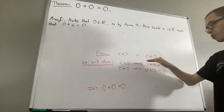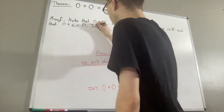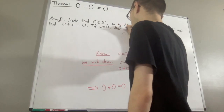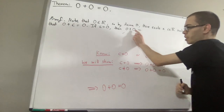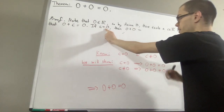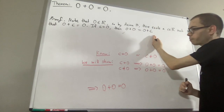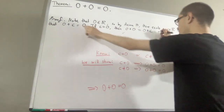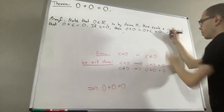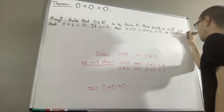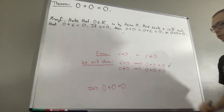We'll start with the first implication: if c is equal to zero, then zero plus zero is equal to zero. If c equals zero, we substitute c for the second zero, applying the substitution property of equality. We know zero plus c is equal to zero, so this shows zero plus zero is equal to zero. This covers the case c equal to zero and proves the first implication.